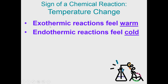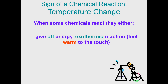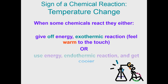Whenever you notice a temperature change, that can indicate either an exothermic or an endothermic reaction. Exothermic means heat is exiting — 'exo' like exiting, 'thermic' like heat — so the outside of the container will feel warm to the touch. Endothermic means heat is entering — 'endo' like enter — so the container feels colder. If the reaction is endothermic, energy is being absorbed into the reaction, causing the container to feel cool.